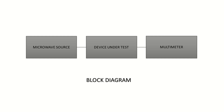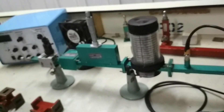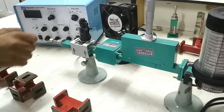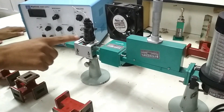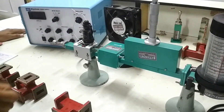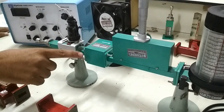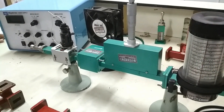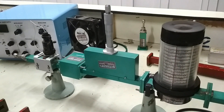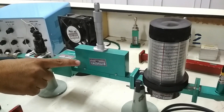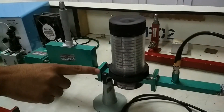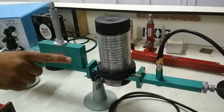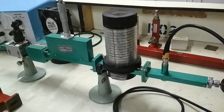Now let's analyze each block. This is our microwave source generator. It consists of various sub-blocks. The first is the Klystron tube, which is used to generate a microwave signal. The second block consists of an isolator, which is used to isolate a signal from input and output. The third block is a variable attenuator, and the fourth block is the frequency meter, which is used to measure the frequency of the generated microwave signal.